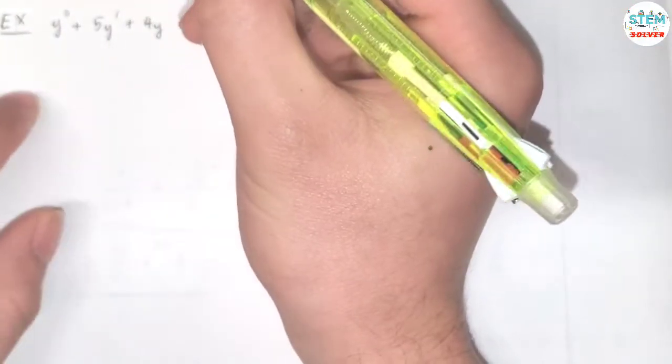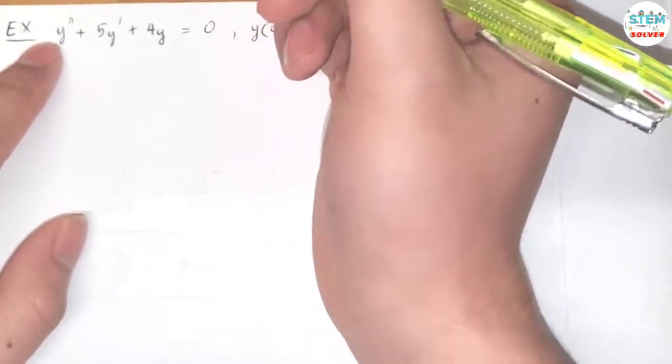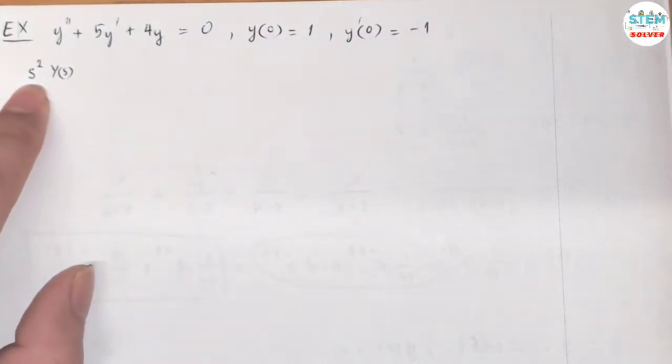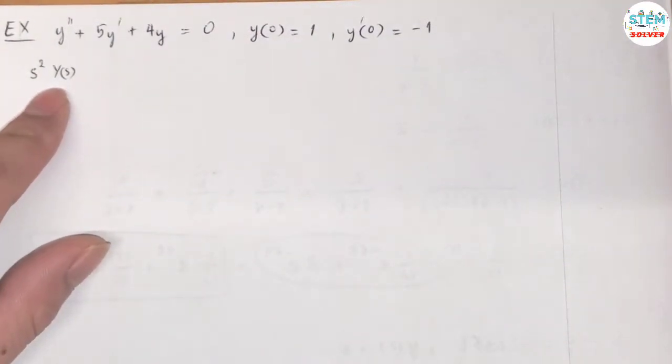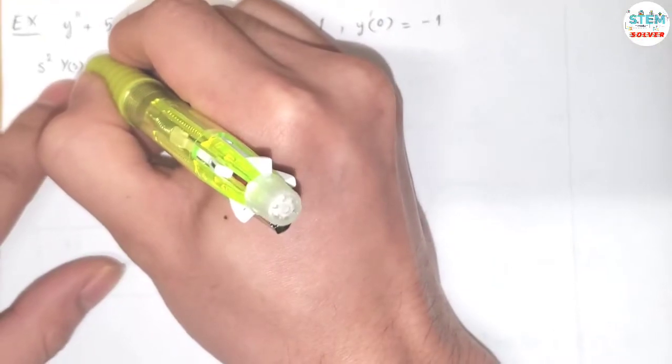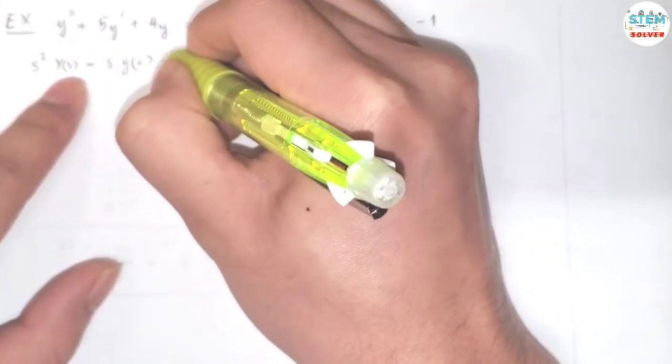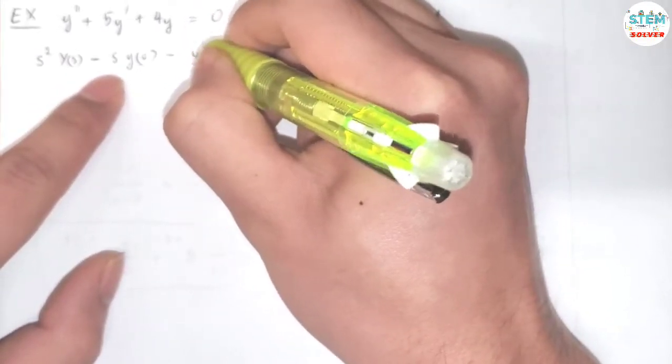Following the theorem we have, this is a second-order differential equation, so we need to have s² times capital Y(s). Always start with s times the highest derivative times capital Y(s), and then subtract down to s⁰, so minus s¹ times y(0), minus s⁰ times y'(0).